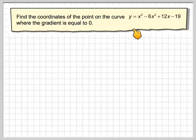Find the coordinates of the point on the curve y is equal to x cubed minus 6x squared plus 12x minus 19, where the gradient is equal to 0.